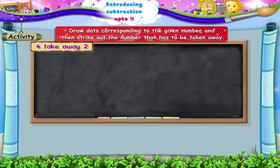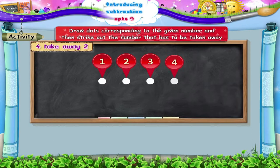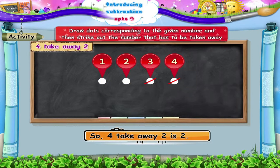Four take away two. One, two, three, four dots. Strike out one, two dots. What remains is one, two dots. So four take away two is two.